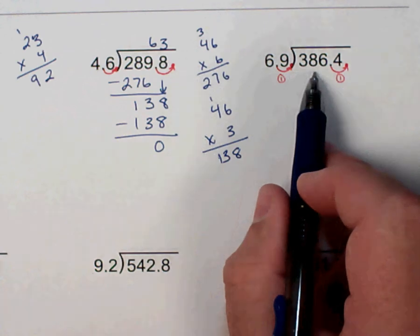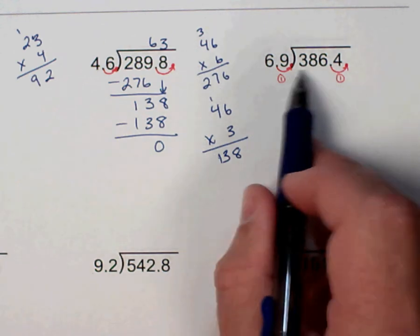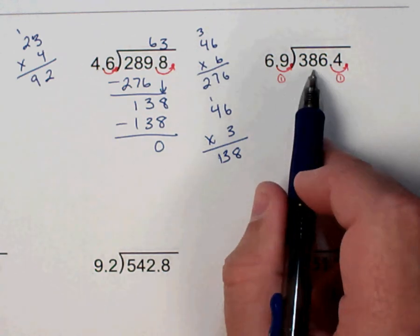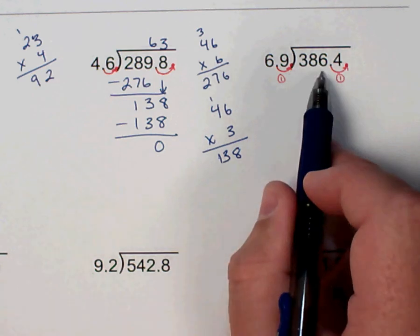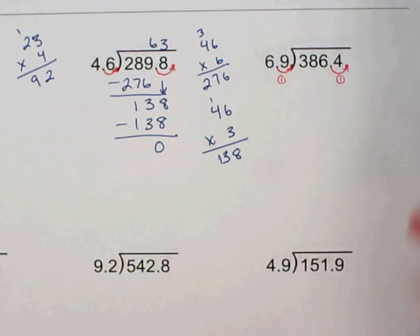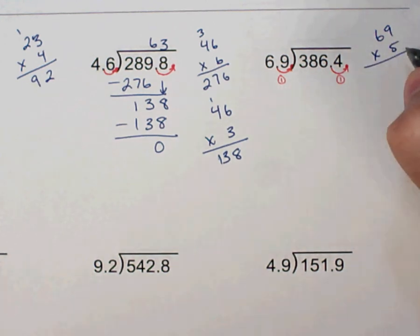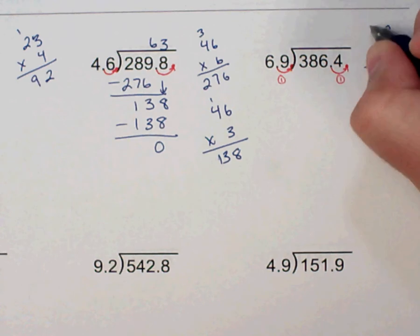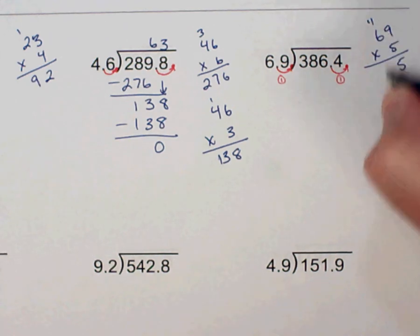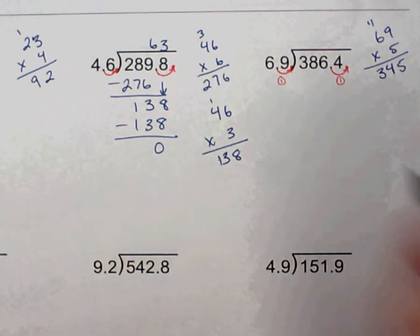69 into 386. I know it won't go into 3, I know it won't go into 38, so now I'm looking at 386. I'm going to go ahead and I'm going to calculate for 5, going 5 times. I'm not sure how close that's going to be. No, that should be okay. So 45 carry the 4, 30 plus 3 is 345. So that works.